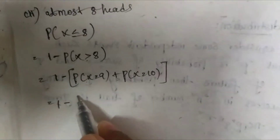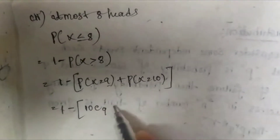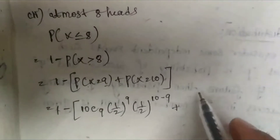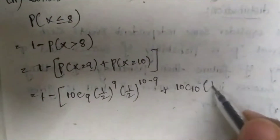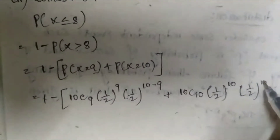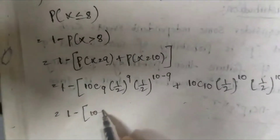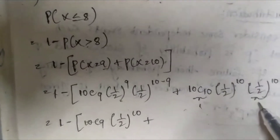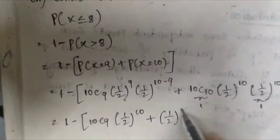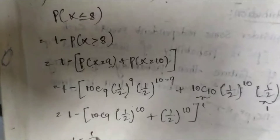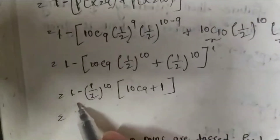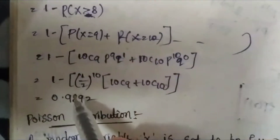Substituting in the formula: 1 - [10C9 * (1/2)^9 * (1/2)^(10-9) + 10C10 * (1/2)^10 * (1/2)^(10-10)]. Taking (1/2)^10 common and noting (1/2)^0 = 1, we get 1 - (1/2)^10 * (10C9 + 1). Calculating this, we get the answer 0.9892.